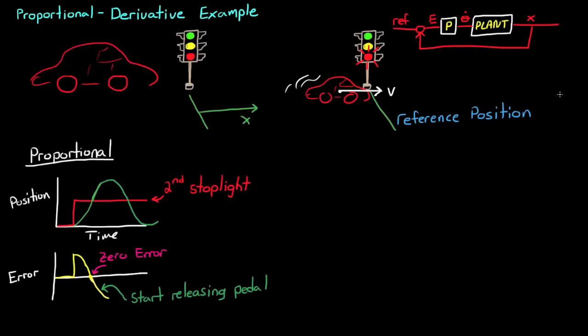Of course, more than likely, the officer will just say, tell that to the judge, and he's going to hand you the ticket anyway. But you can avoid all of that mess by using a proportional derivative controller.